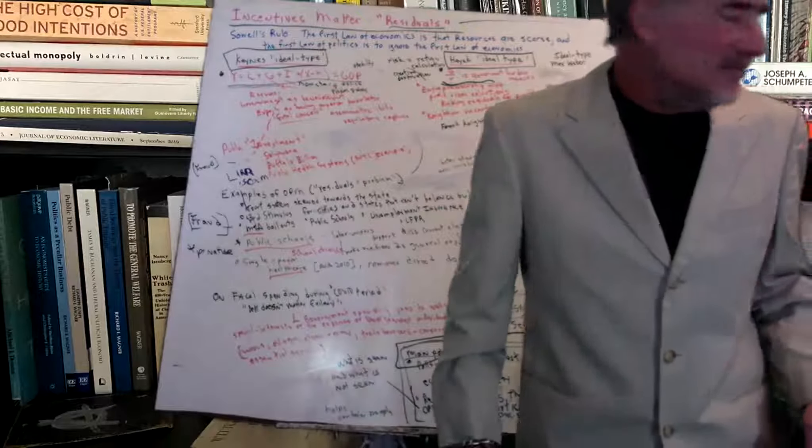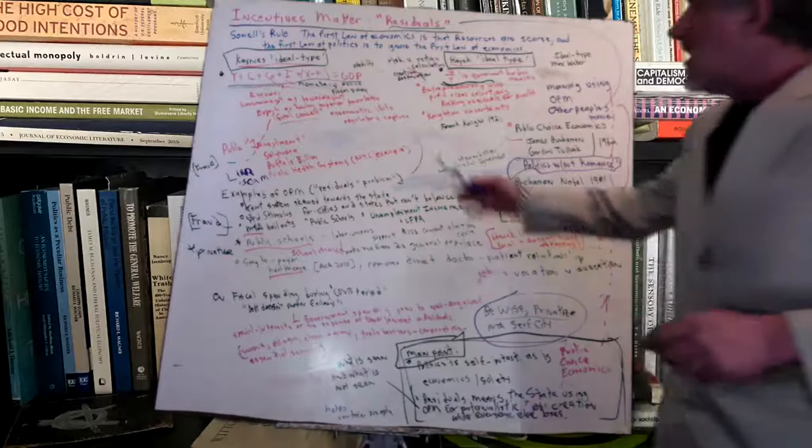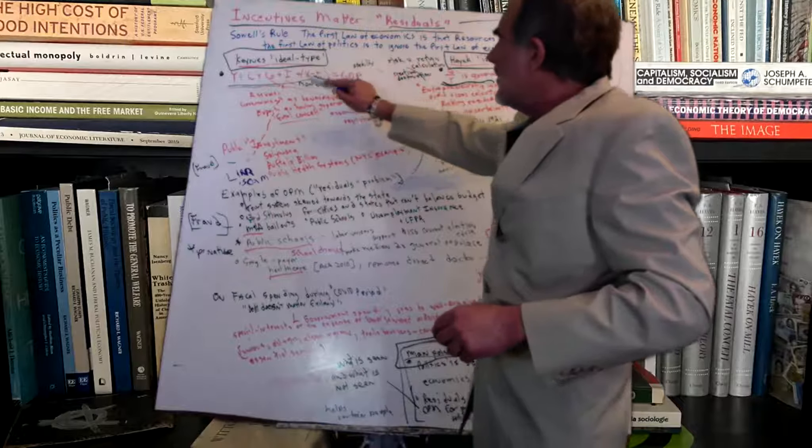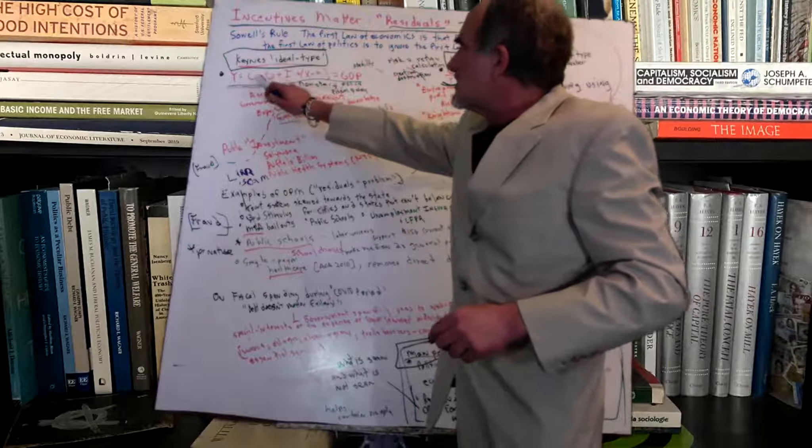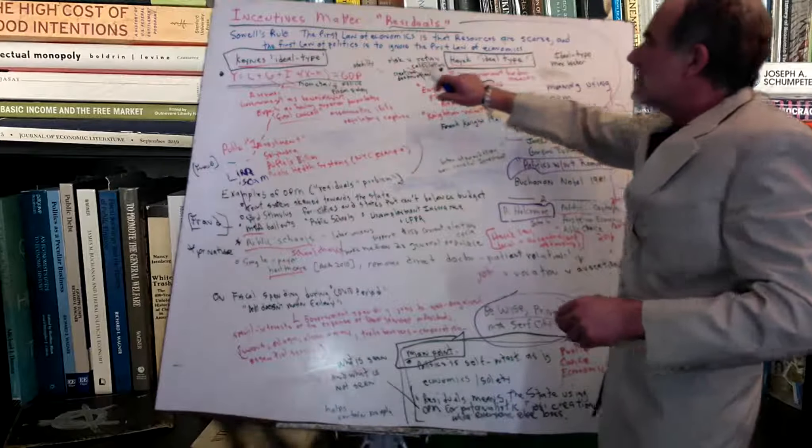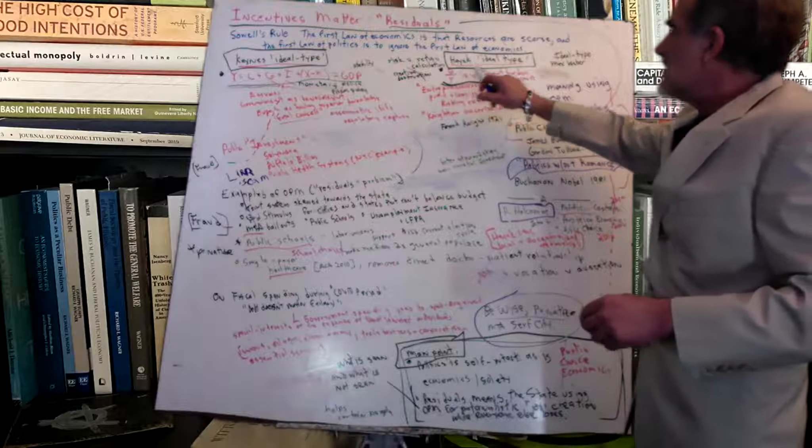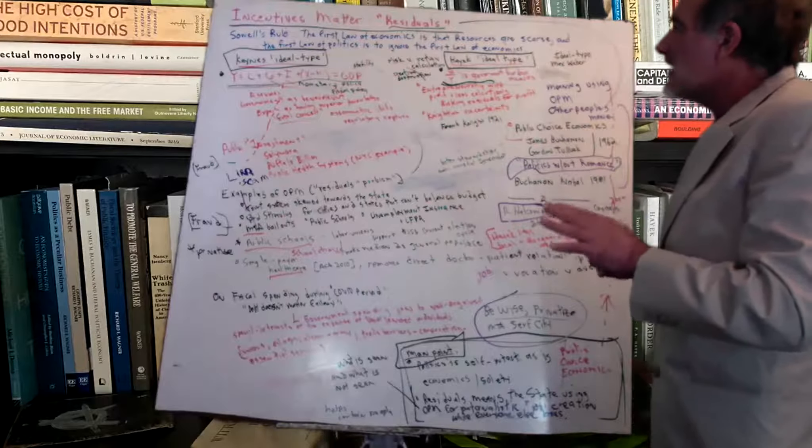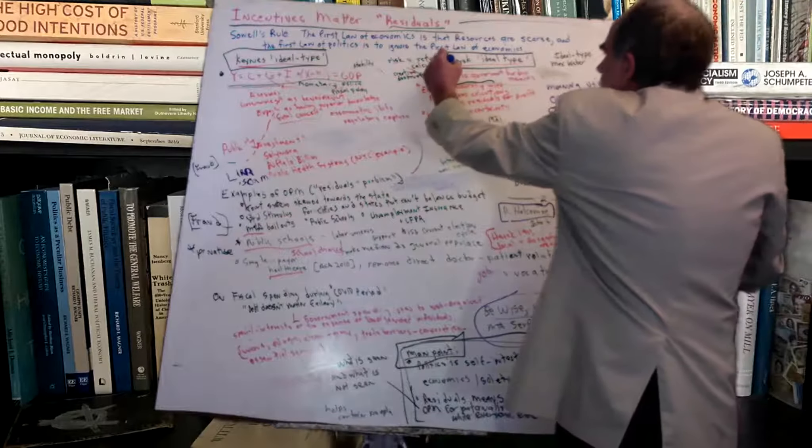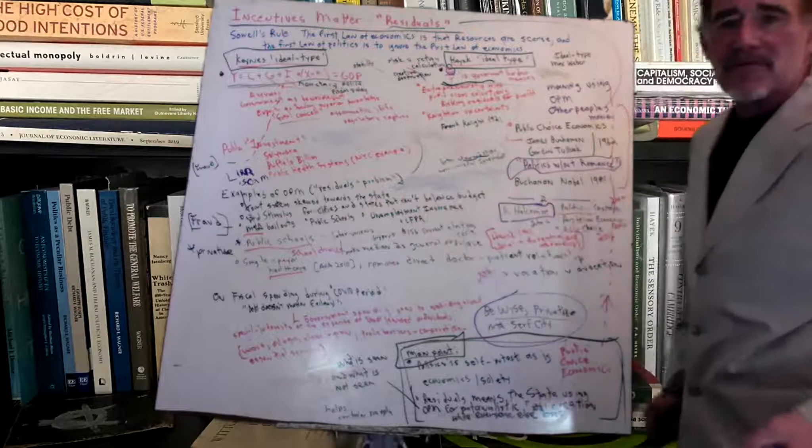So then if we look at our categories, our ideal types, Keynes ideal type, where national income is equal to consumption, government spending, investment, exports, minus imports, and the Hayekian ideal type, where you disaggregate the Keynesian equation and government as a percentage of the economy is a burden. Well, you can look at that in terms of residuals and it'll help explain it more because the state has no residuals.